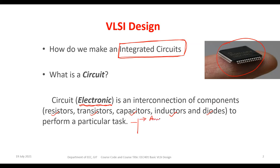The components we consider in electronics are resistors, transistors, capacitors, inductors, and diodes. We connect these components in order to perform a particular task — for example, amplification or switching, among many other applications.